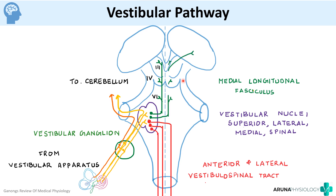The medial longitudinal fasciculus is a pathway that connects our cranial nerves three, four, and six. From the vestibular nuclei there are fibers that ascend via the medial longitudinal fasciculus to connect the oculomotor, trochlear, and abducent cranial nerve nuclei. This is especially important in reflexes like the vestibulo-ocular reflex, which connects the vestibular system with ocular movements.